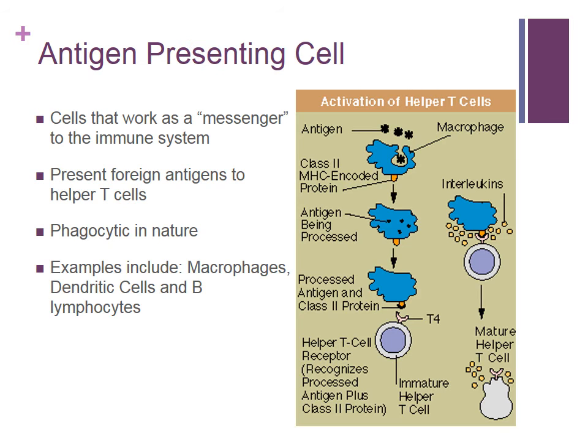Antigen-presenting cells recognize foreign materials such as allergens. These cells engulf the allergens, process them internally, and present them on the exterior. The presentation of these allergens to the helper T cells is the next step, which can either lead to a learned behavior for immune cells or trigger an immune response. Examples of antigen-presenting cells are macrophages, dendritic cells, and B lymphocytes.